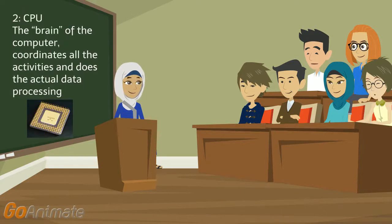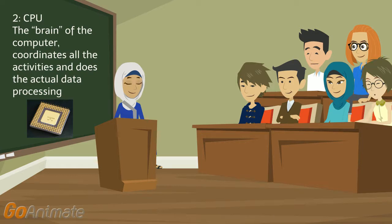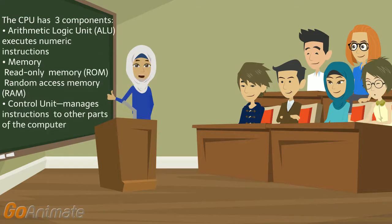The second category is the CPU. It is the brain of the computer; it coordinates all the activities and does the actual data processing. The CPU, the central processing unit, has three components: the arithmetic logic unit (ALU), which executes numeric instructions.